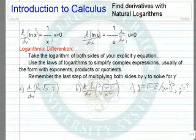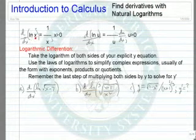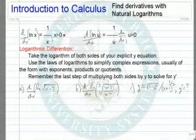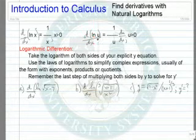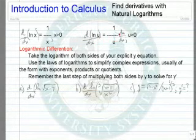We will find derivatives involving natural logarithms. The derivative of the natural log of x is 1 over x, which is only defined when x is greater than 0. If we have u as a function of x, then the derivative of the natural log of u with respect to x is 1 over u times du/dx, applying the chain rule.